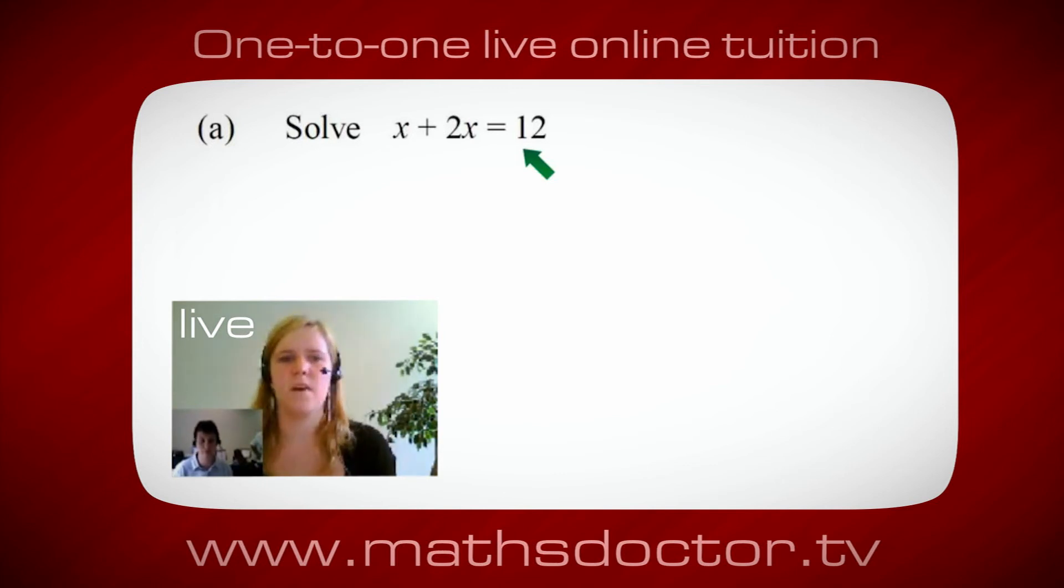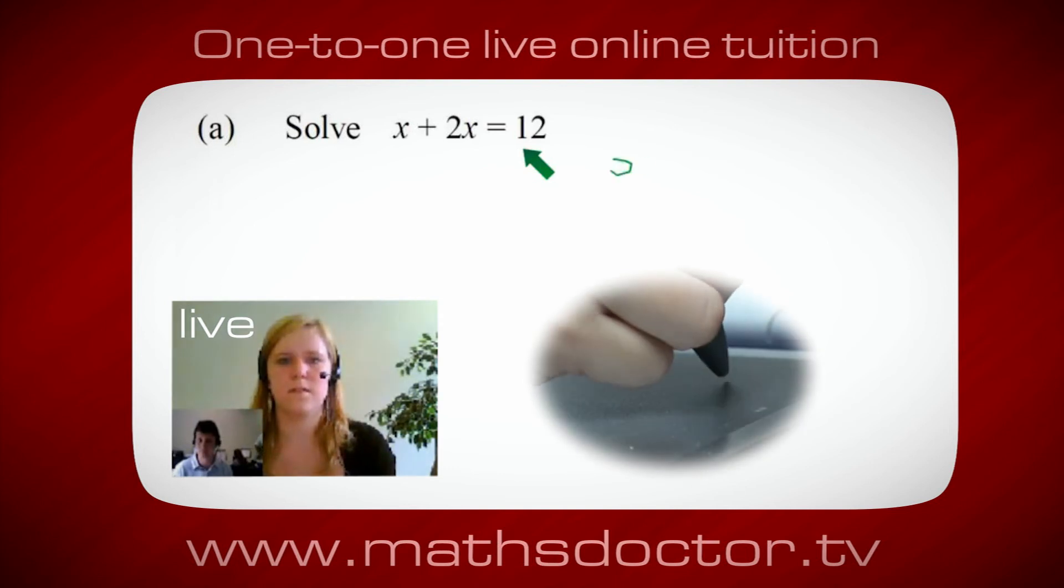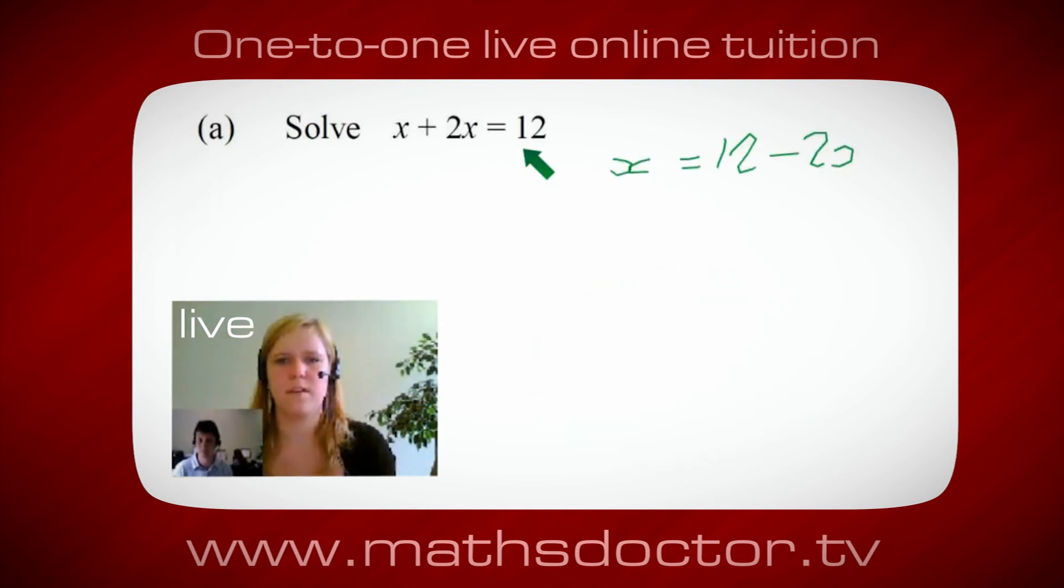Okay, well I want x on its own, so I would put x equals 12 minus 2x.